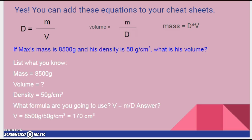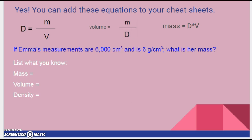Hey, this is Mrs. KJ going over part two of 1.11 density. All right, so we have another question. If Emma's measurements are 6,000 centimeters cubed and is 6 grams per centimeter cubed, what is her mass?